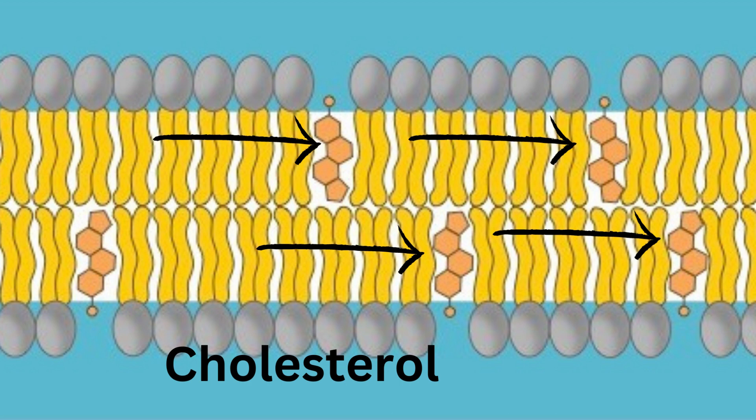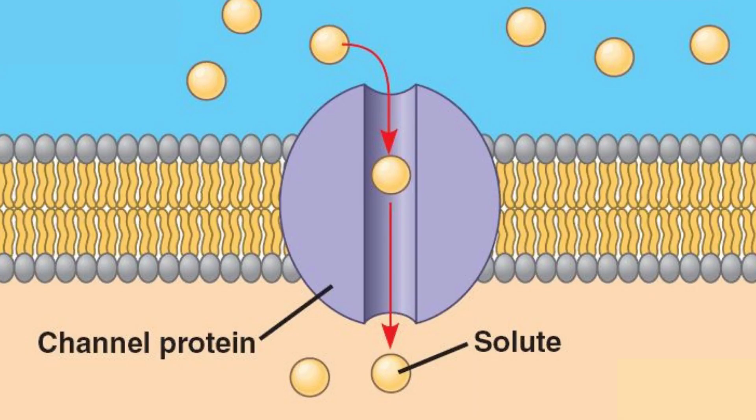In addition, the cell membrane is filled with many different proteins that have a wide variety of functions. Some of these are channel proteins, which float about in the sea of phospholipids and facilitate the movement of some kind of molecule across the membrane. Let's learn about these proteins and the different ways that substances can move in or out of the cell.